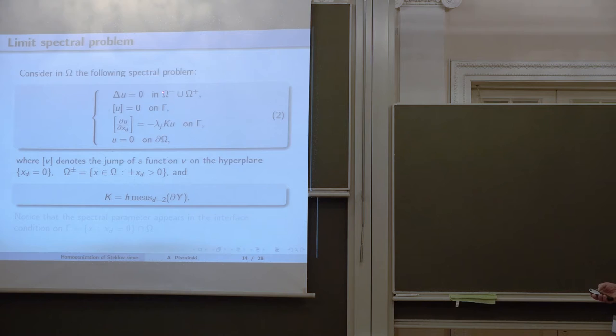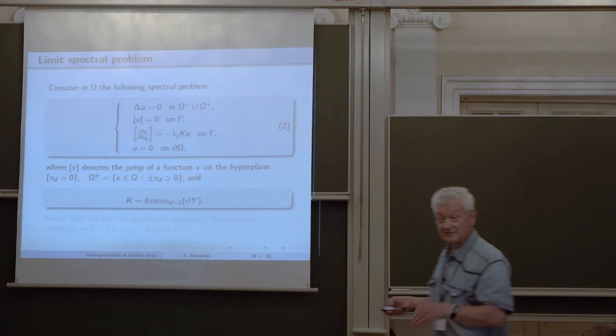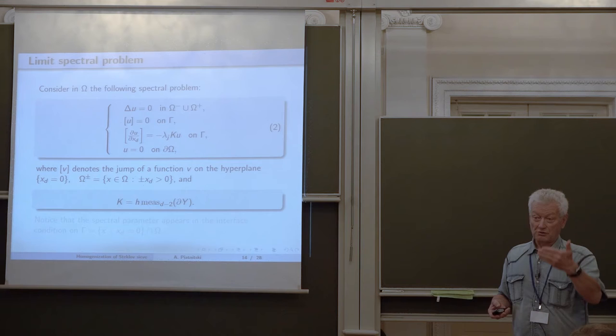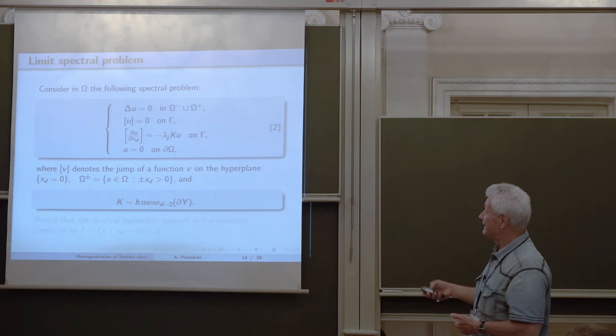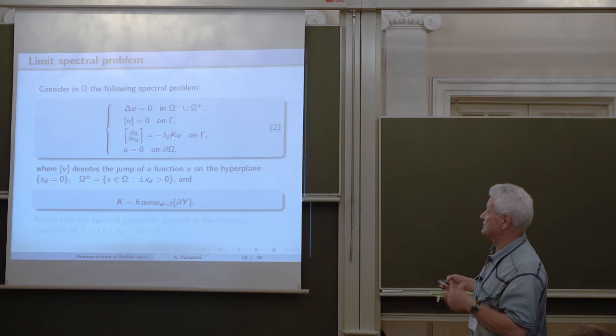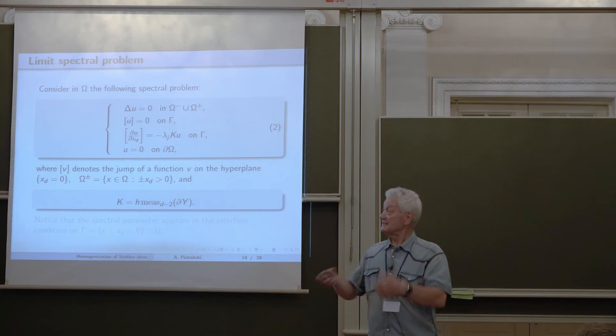Now we write down the limit problem. It has the same operator in the upper and lower parts of the domain, the same Dirichlet condition at the exterior boundary, and the function is continuous across the interface (the jump is zero). But the normal derivatives from the upper and lower parts are not continuous — the jump of the normal derivative on the interface is proportional to the function itself with coefficient k and spectral parameter lambda j.